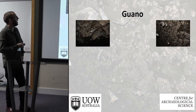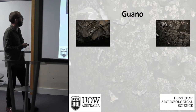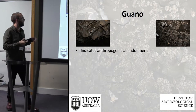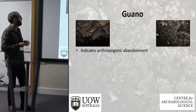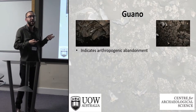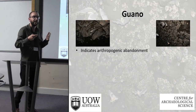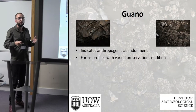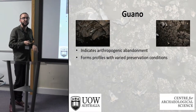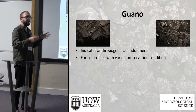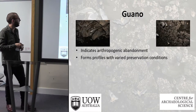One of the main factors affecting preservation is guano — the droppings of bats in this case, but can also refer to birds. It generally indicates periods of anthropogenic abandonment because bats don't really like to live around humans. In the tropics it forms profiles meters deep, and within these and surrounding them, preservation conditions can vary greatly.